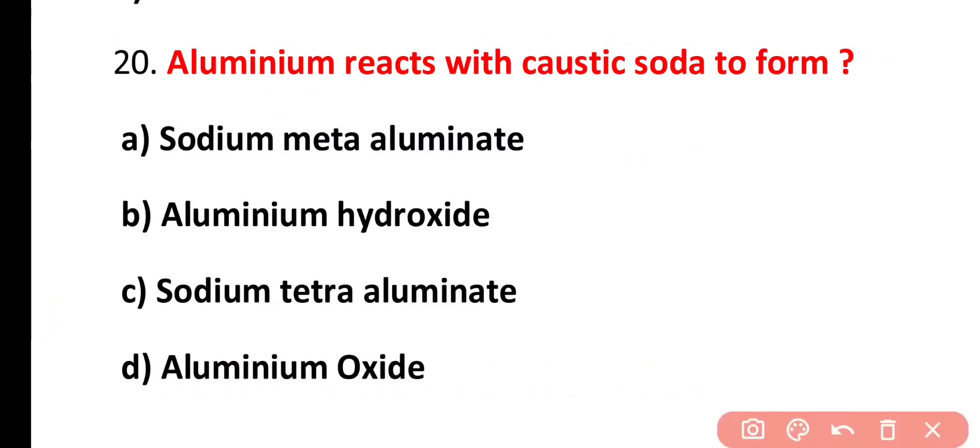Question number 20. Aluminium react with caustic soda to form sodium meta-aluminate, aluminium hydroxide, sodium tetra-aluminate, aluminium oxide. Correct answer is option A. Aluminium reacts with caustic soda to form sodium meta-aluminate.